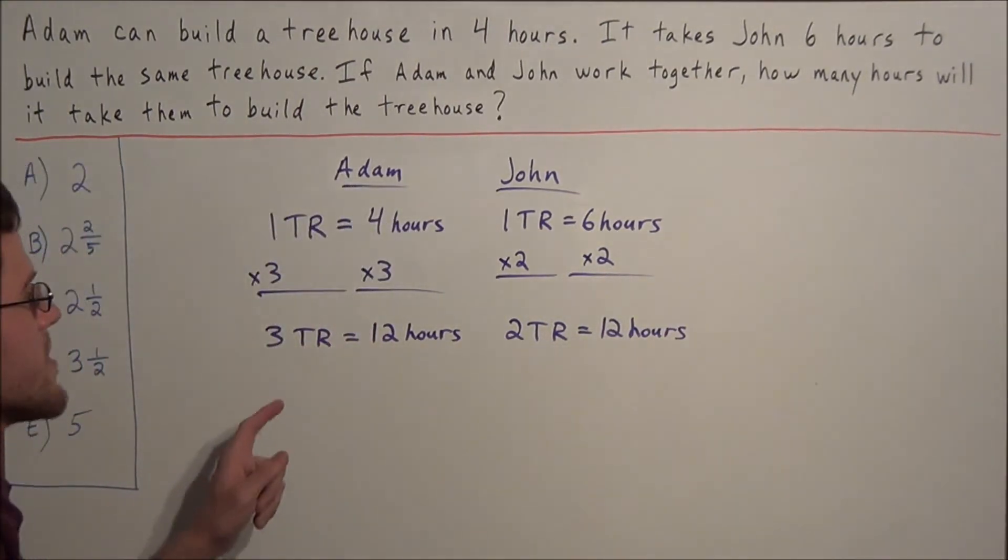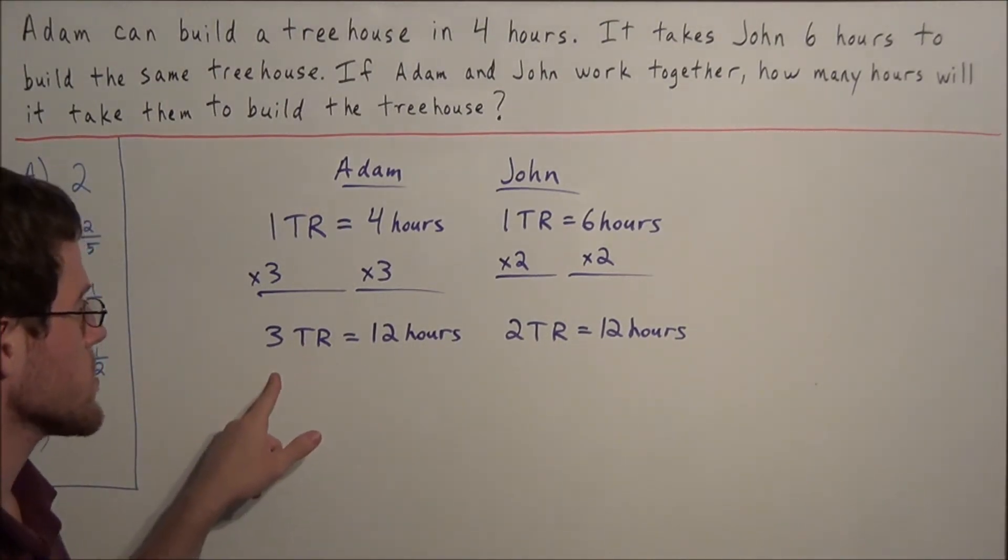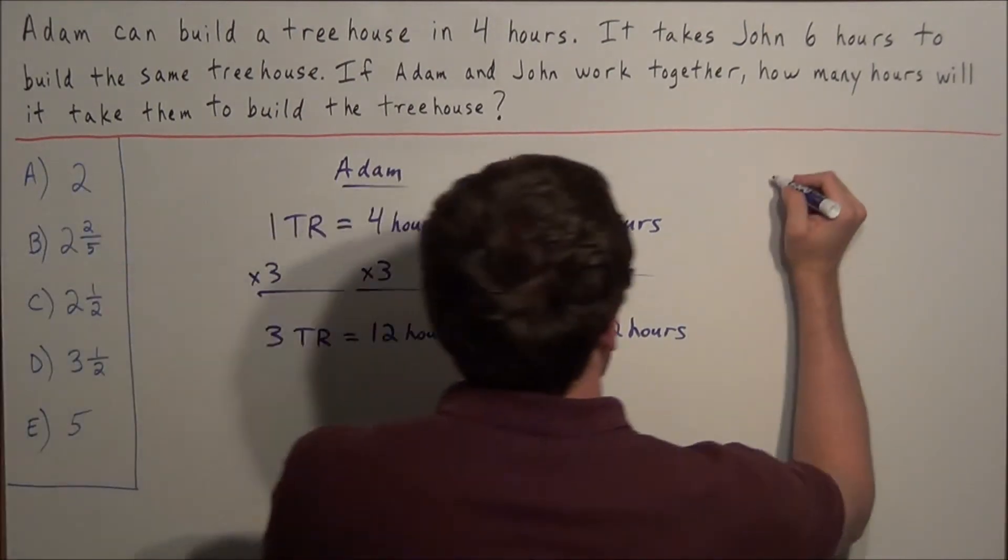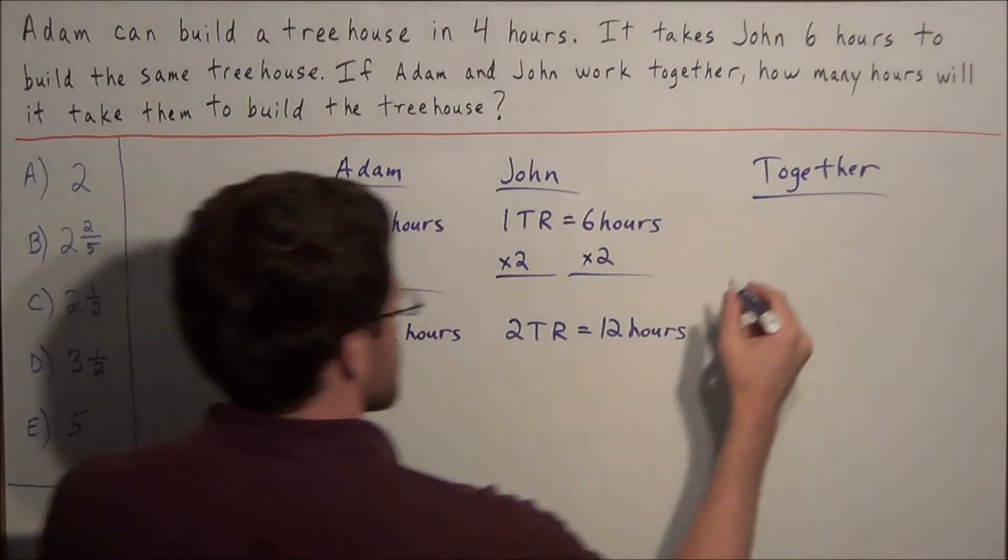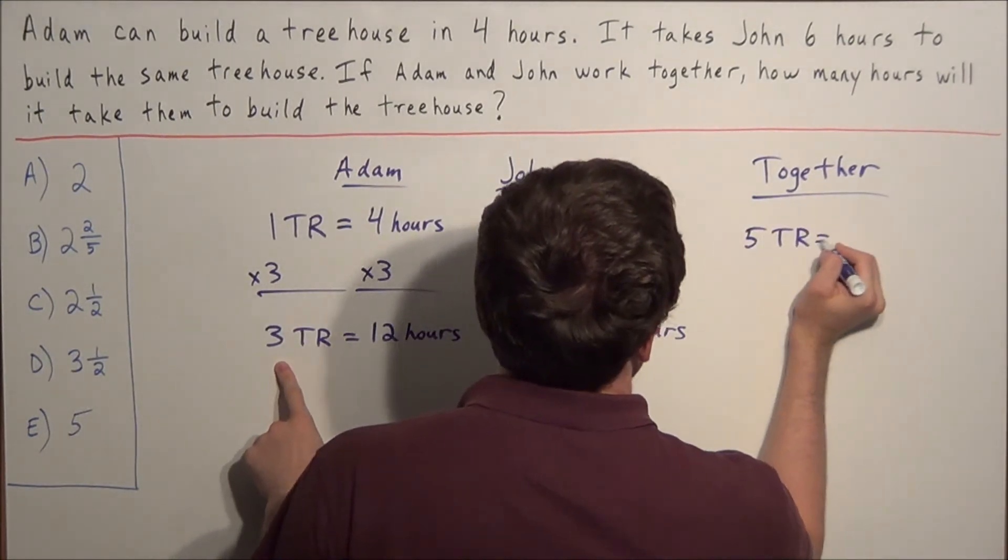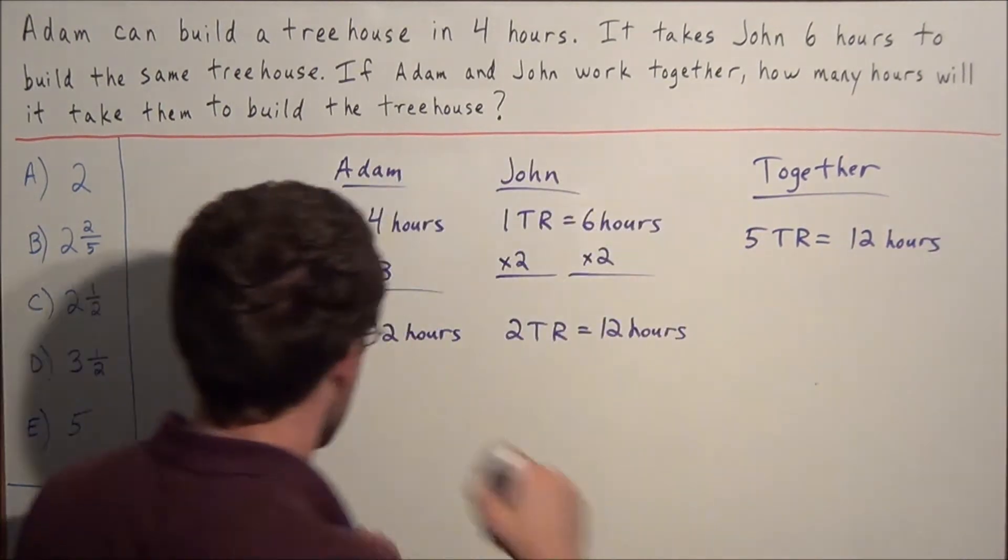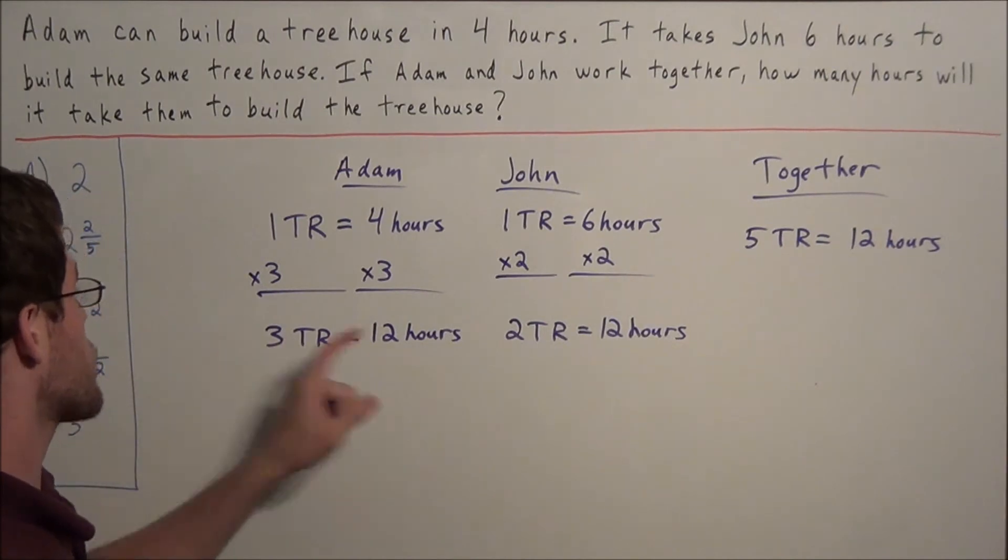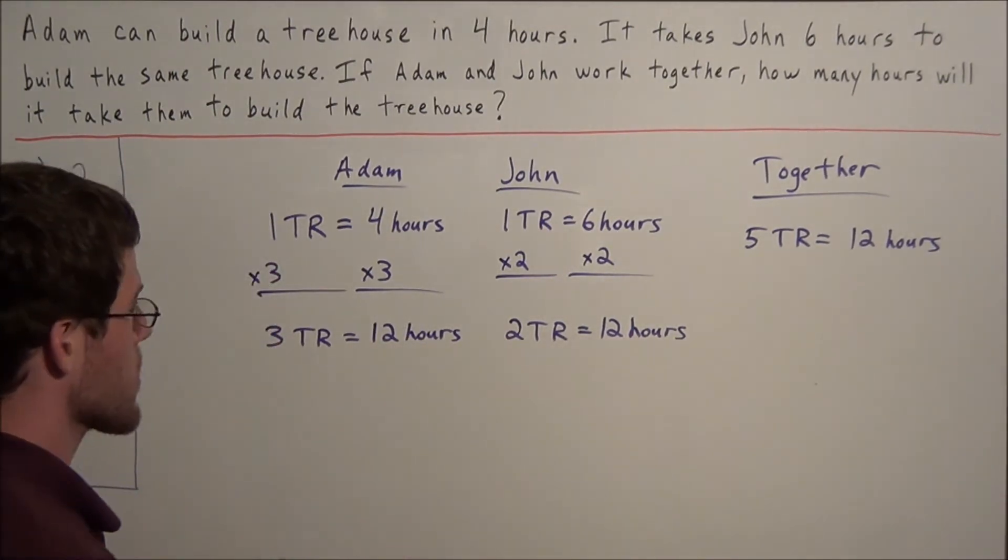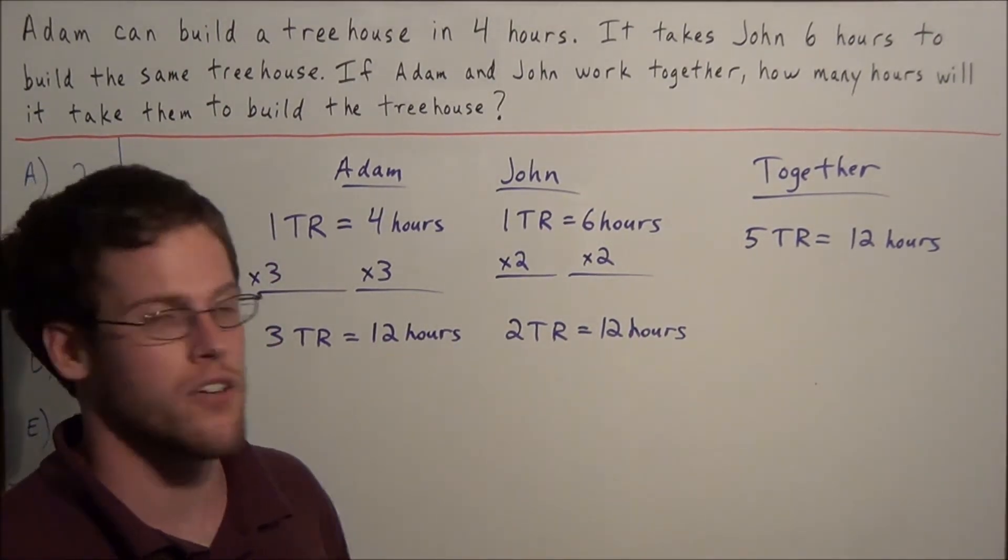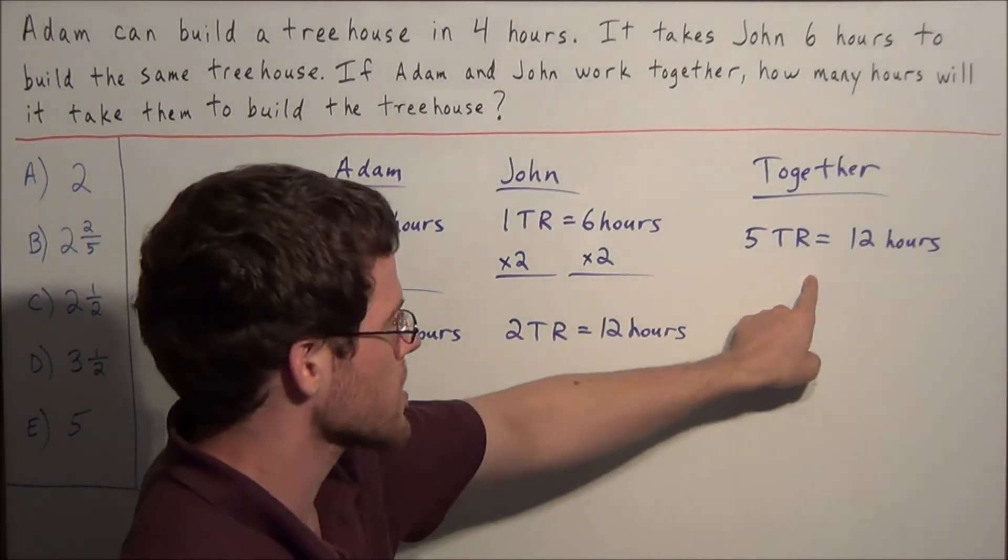So now we know how they work together. If they worked together for twelve hours, Adam would build three treehouses and John would build two treehouses. So together, they could build three plus two or five treehouses in twelve hours. The reason we're not adding their times is because we have to interpret this logically. In twelve hours Adam builds three treehouses and in twelve hours John builds two treehouses. Since they're both working at the same time, those twelve hours are going by together and not one after the other.